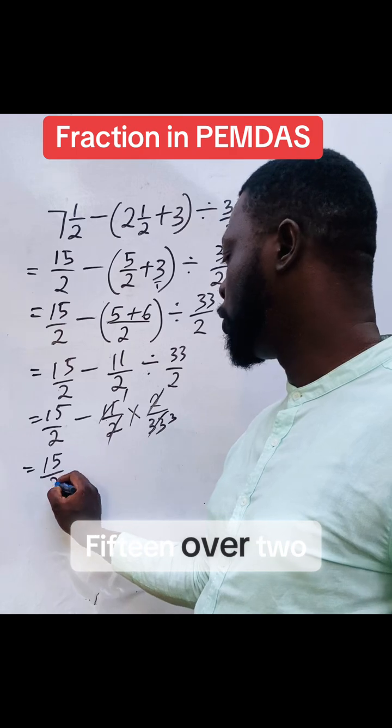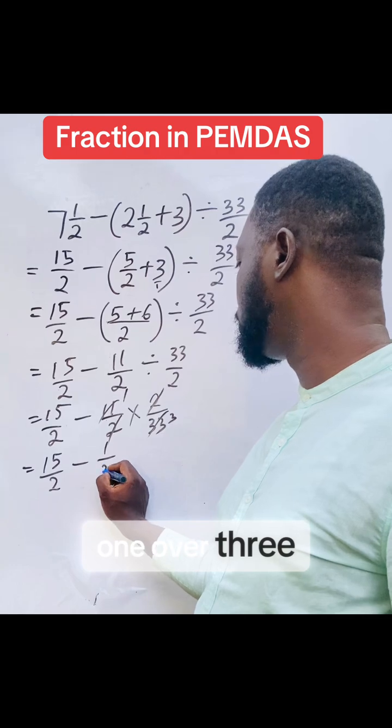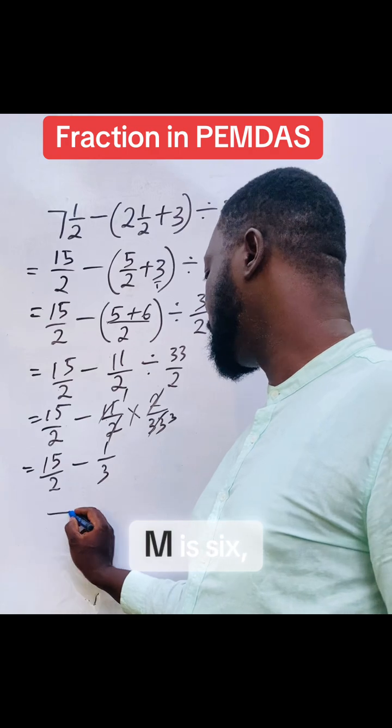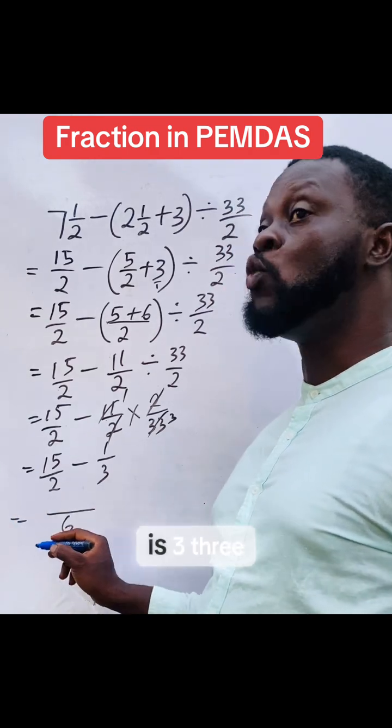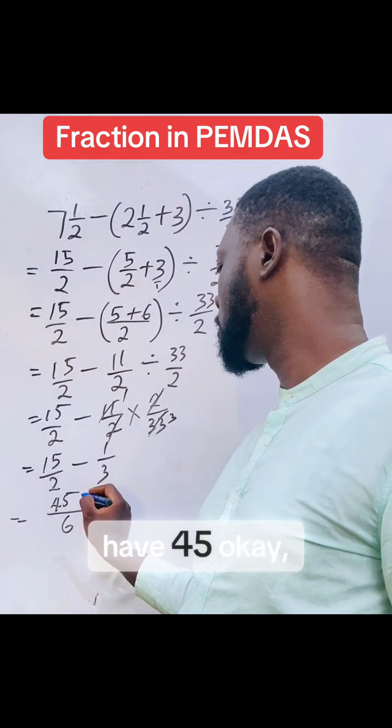15 over 2 minus 1 over 3. So quickly, the LCM is 6. 6 into 2 is 3, 3 times 15, you have 45.